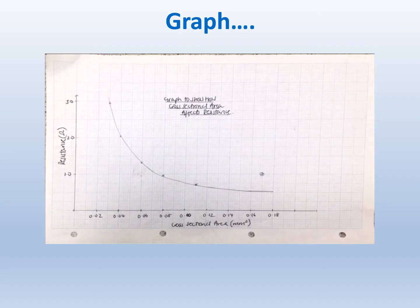You should have a graph of results that looks like this, plotting the resistance in ohms against the cross-sectional area — in this case plotted in millimetres squared. You should have your points neatly plotted and a line of best fit, ignoring the final point which was anomalous. You should also have a title and a sensible scale for both axes. Pause the video now and check your graph.